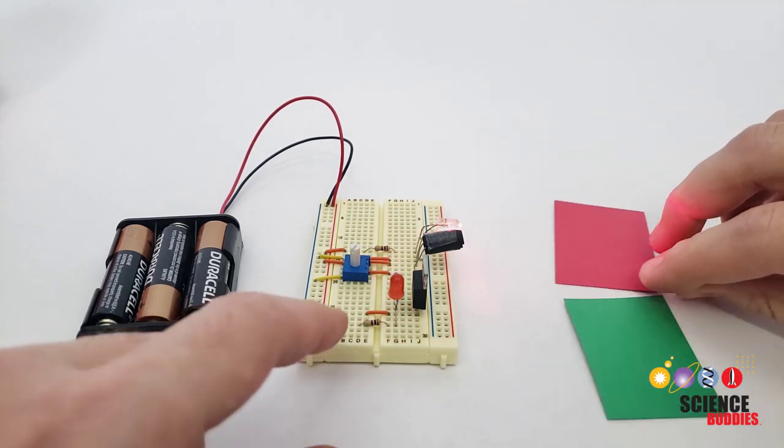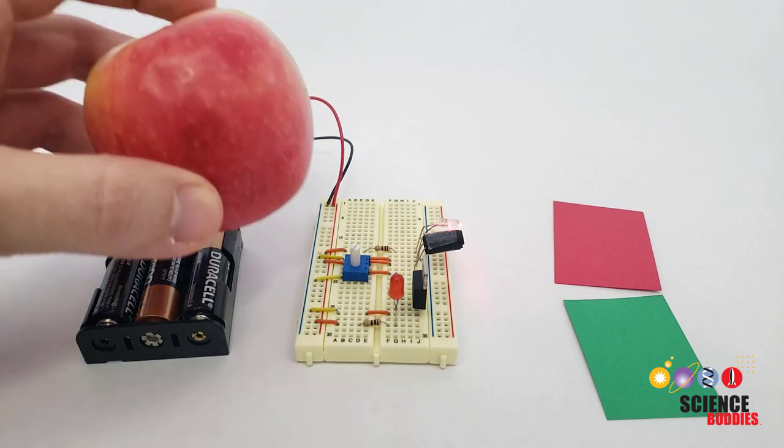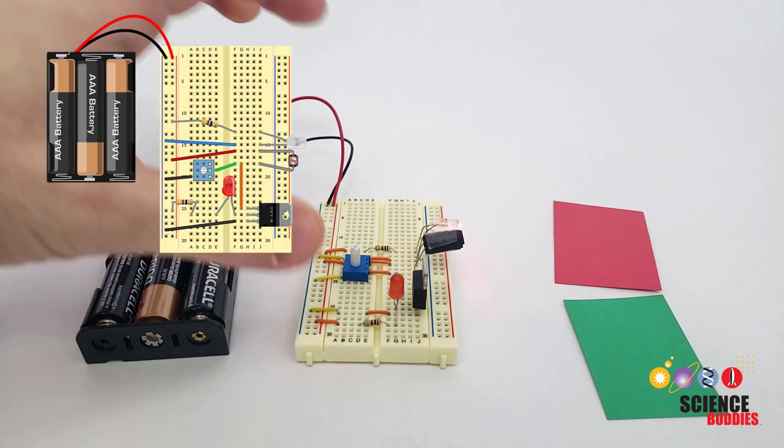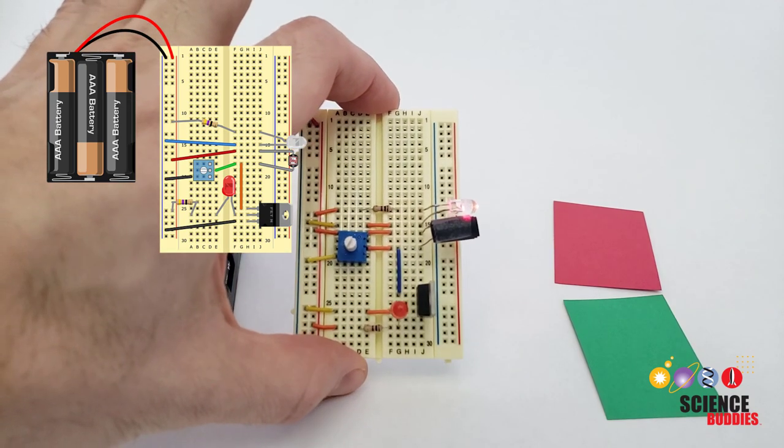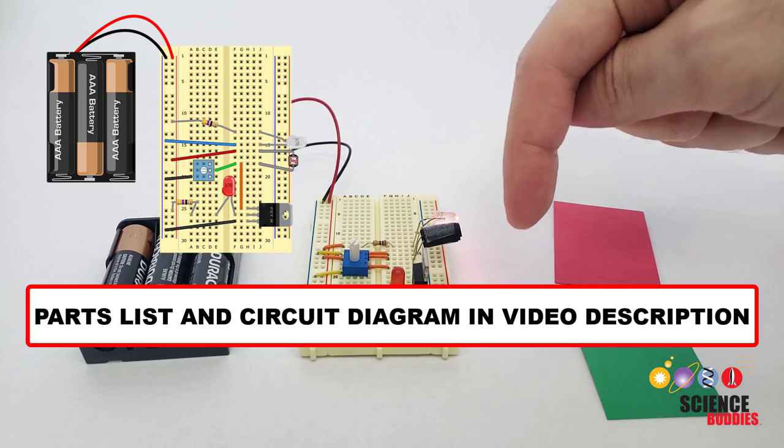In this video, I'll explain how this circuit works and how you can use it for a science project, for example to detect when produce is ripe. For instructions to build the circuit, including a complete parts list and circuit diagram, check out the link in the description of this video.